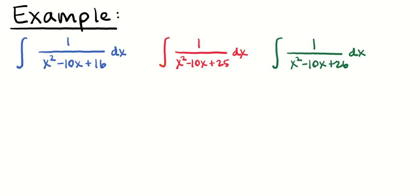I'm going to start with three examples, and I'm going to keep comparing and contrasting integrals and folding in our new techniques. Looking at the far left blue integral, we look at the denominator and say we can factor that — it's going to factor into (x − 8)(x − 2). Those are two distinct factors, so we need to use partial fractions. If you need practice on that, pause the video now, work it yourself, and then check your answer against mine.